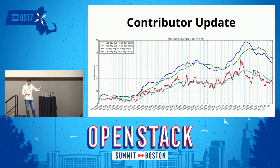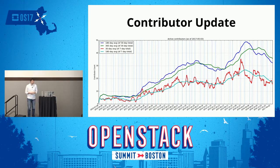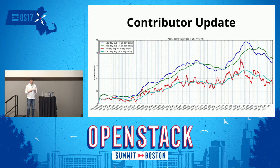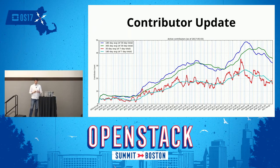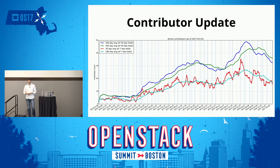Over the past two years you can see a rise and then a decline, and looking at the longer timescale going all the way back to 2010, we're currently at about 16 unique contributors every week and about 33 every month. The slope is trending downwards, and the biggest reason is that several companies have shifted their focus away from Swift specifically or from OpenStack in general — people have lost jobs or been reassigned.